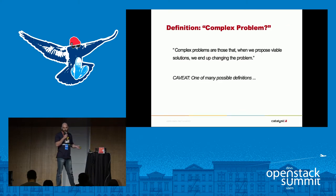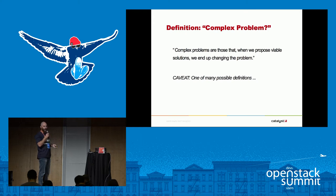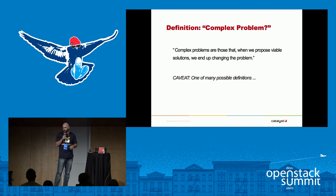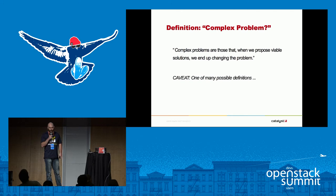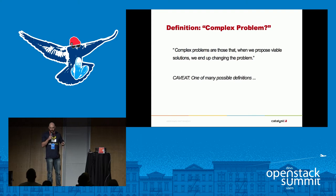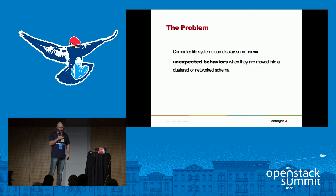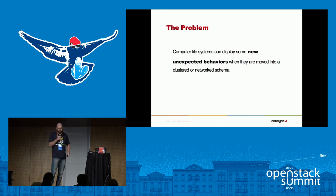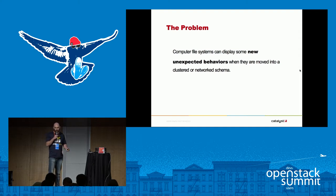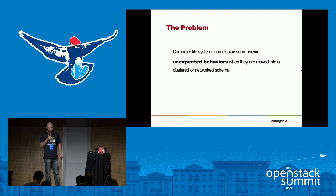I want to start this presentation with a definition of a complex problem. There are a couple of different flavours of this definition — I cannot actually remember where I heard it — but it's very applicable in the IT space. A complex problem is one that, when we start thinking about solutions as technical people and we propose those solutions, what we end up doing is changing the problem. And the problem in the case of a clustered or distributed file system is that there can be some new and unexpected behaviours when you move from a single traditional file system that was sitting one cable away from your CPU in a standard server, to one that is distributed or networked.